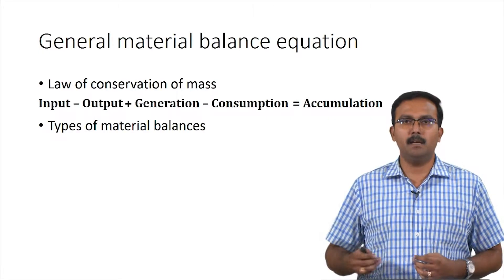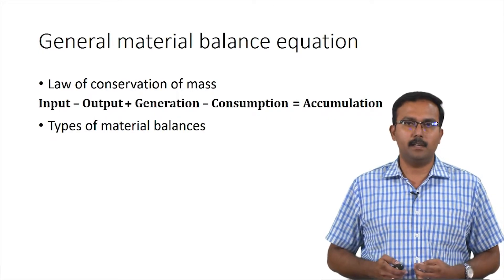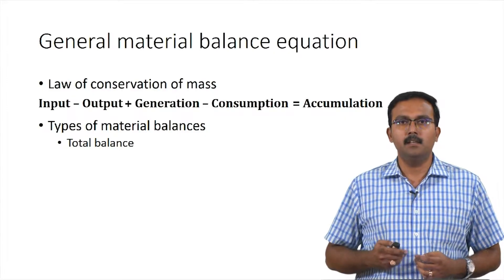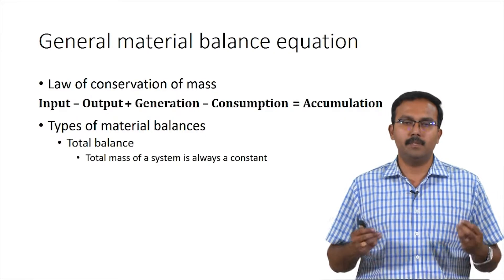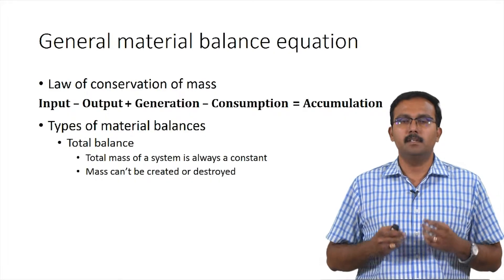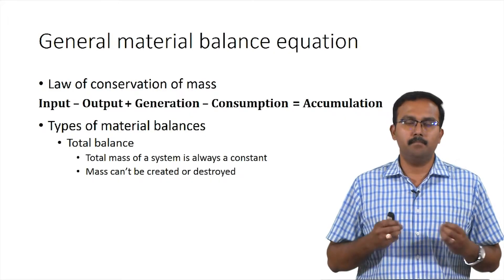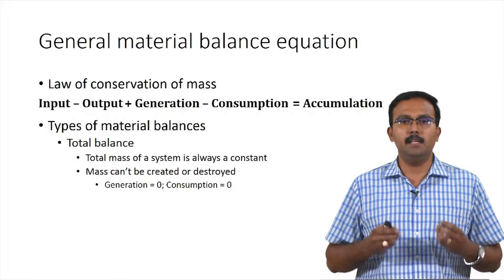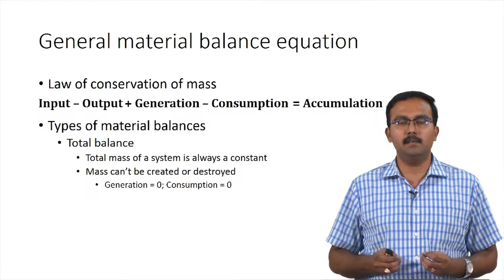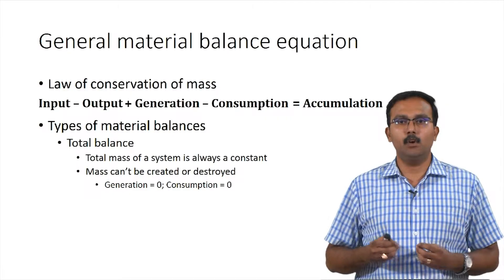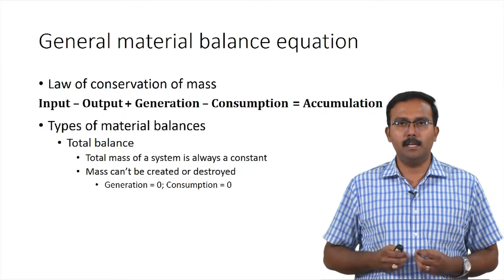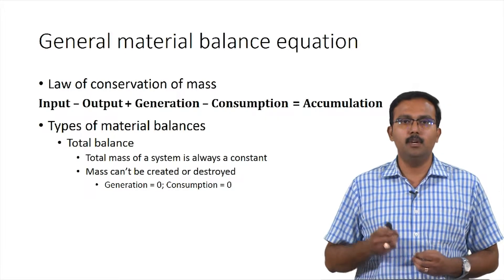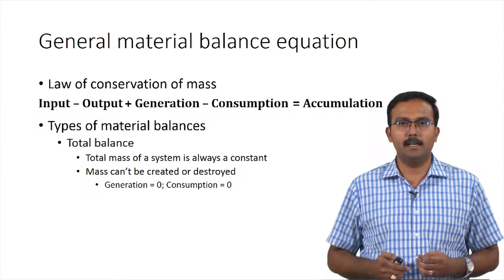What are the types of material balances that we can write? We can write a total mass balance. Total mass of a system is always conserved, which means mass cannot be created or destroyed, thereby the equation becomes input minus output equals accumulation, because generation and consumption terms are zero for the total balance.